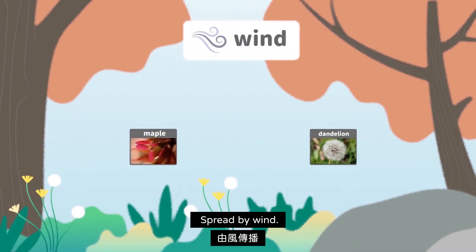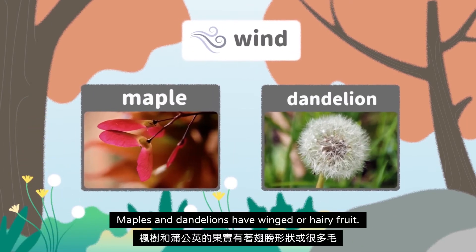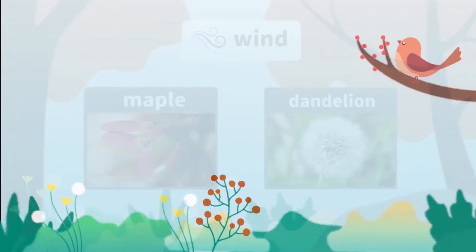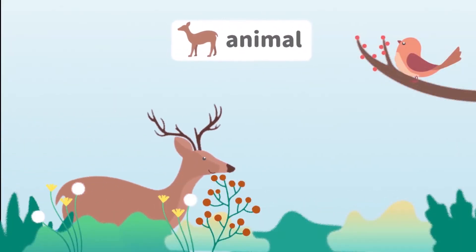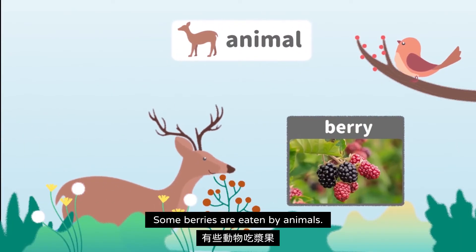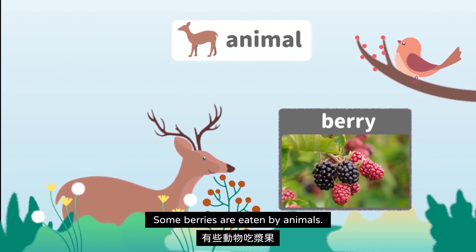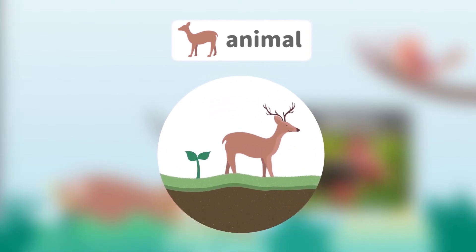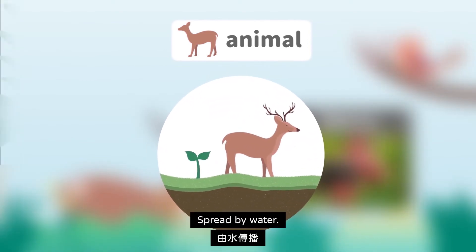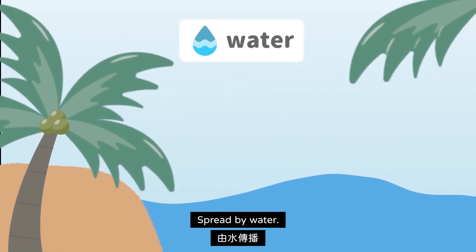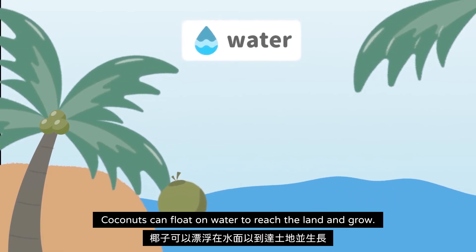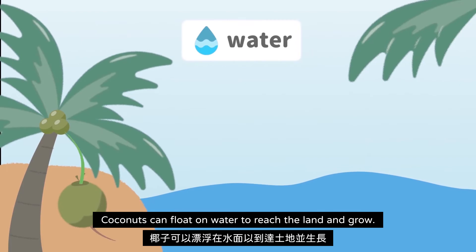Spread by wind: maples and dandelions have winged or hairy fruit. Spread by animals: some berries are eaten by animals, and animals will help them to spread seeds. Spread by water: coconuts can float on water to reach the land and grow.